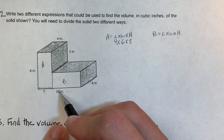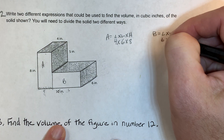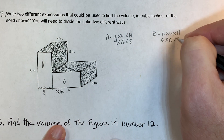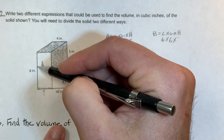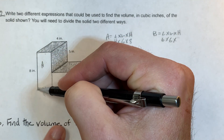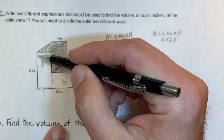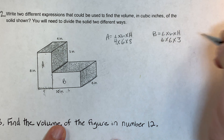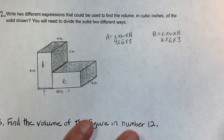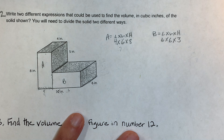For Volume B: I cut off four from the total length of 10, so the length of B is 10 minus 4, which is six. The width stays six. The height of B — the whole height is eight, and this portion is five, so eight minus five gives me three. My formulas are complete. Solving: six times four is 24, and 24 times eight gives Volume A.